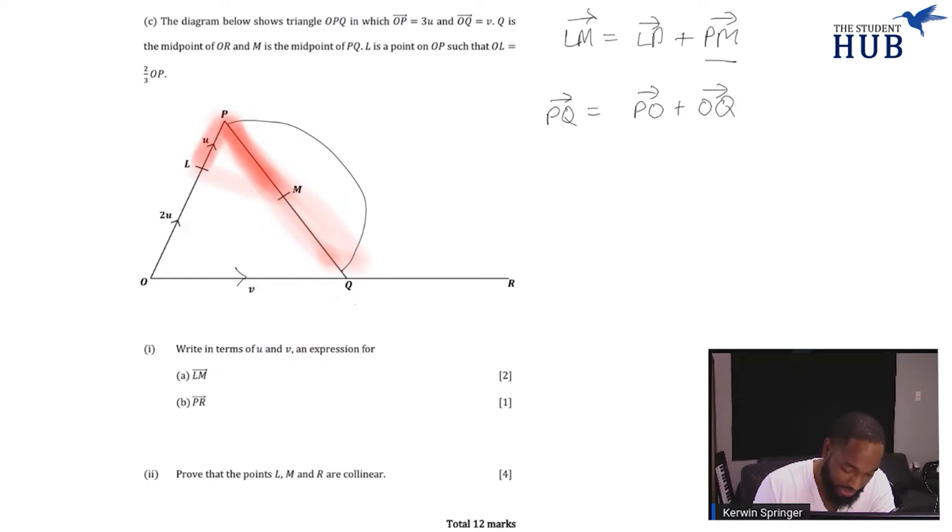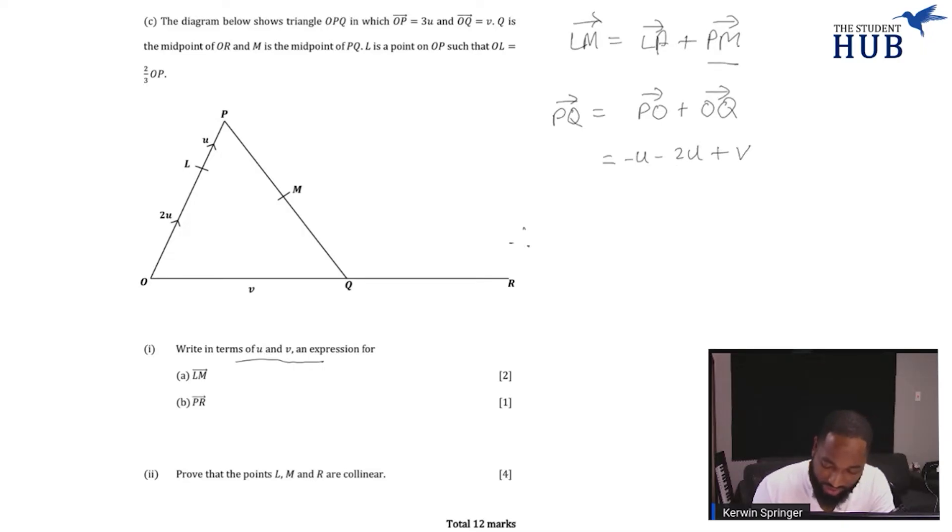That's the thing behind this. PO is really negative u, minus 2u, and OQ is really v. So I have now - the thing with vectors and directions very important - this is really v minus 3u. This is going opposite, you see the arrows. So if I want to say PU it's opposite, so I should put a negative there, 3u.